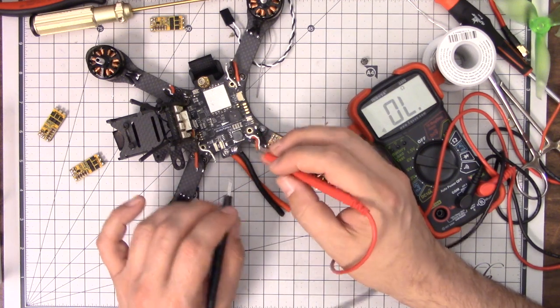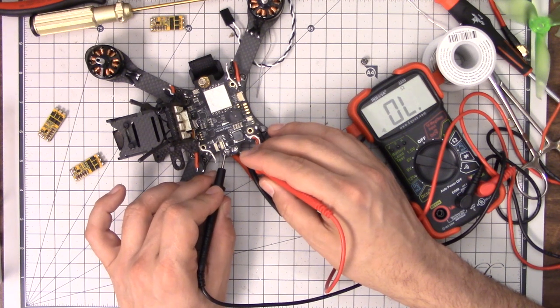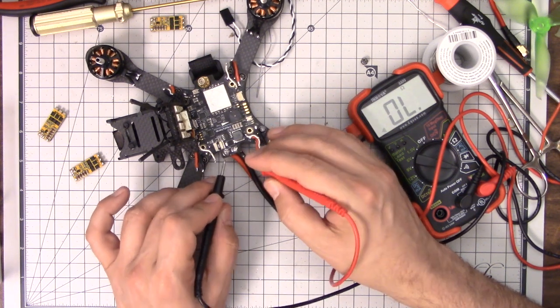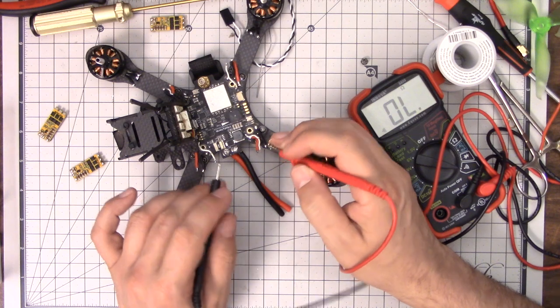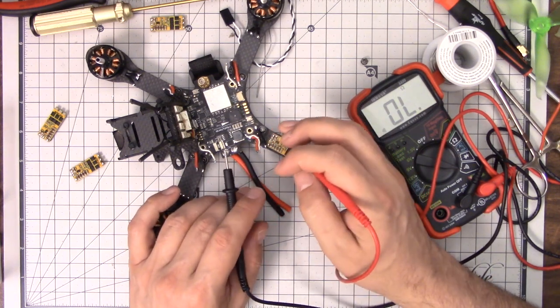And if you test it and you find that, well, the first thing I would do is I would start desoldering the ESCs, which is going to be a really sad thing to do if you just spent all night installing them. But you can't fly when you have continuity between positive and negative. You're going to smoke the battery, the back cop, you're not going to have a good time.